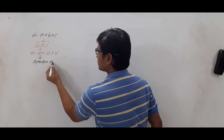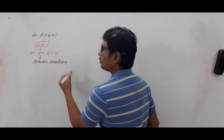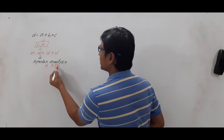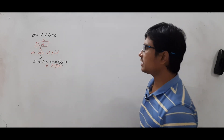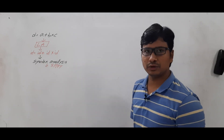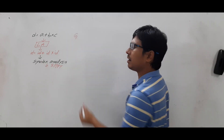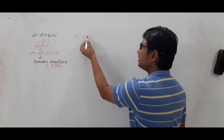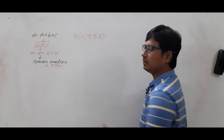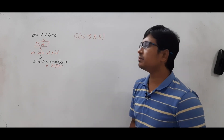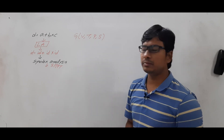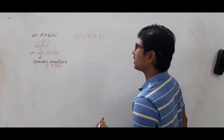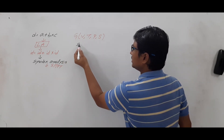If I give this sequence of tokens to the syntax analysis phase, it will generate a syntax tree or parse tree. The syntax analysis phase takes the sequence of tokens as input along with the corresponding grammar. A grammar can be represented as (V, T, P, S), where V is the set of variables, T is the set of terminals, P is the set of productions, and S is the start symbol.